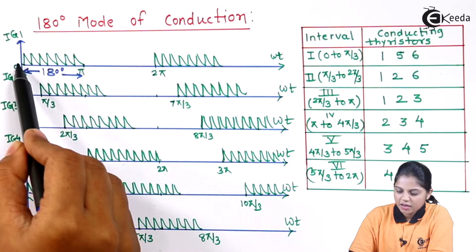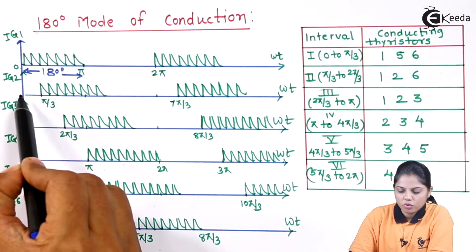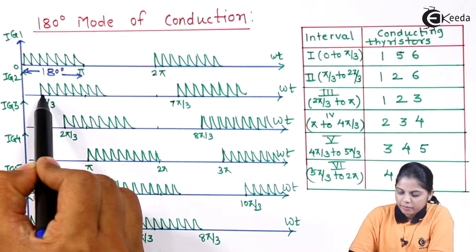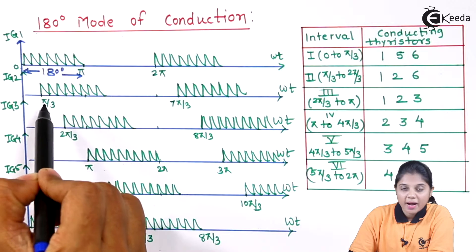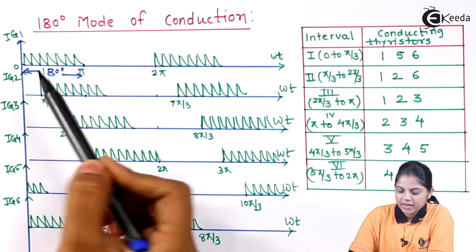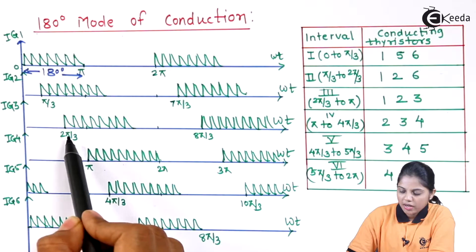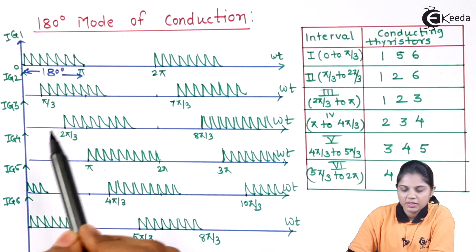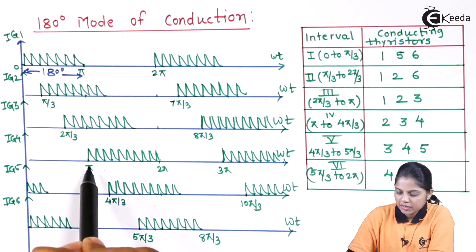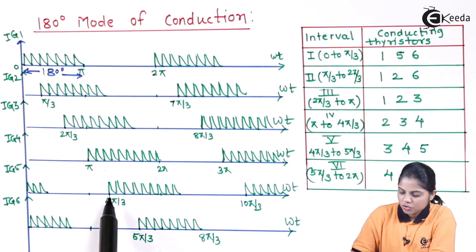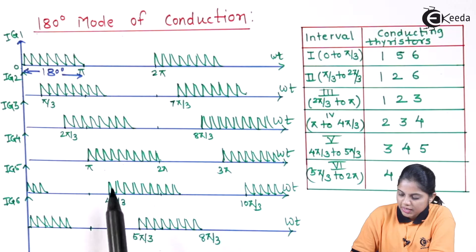SCR1 is turned on at 0. SCR2 starts on at pi/3, that is 60 degrees. Then SCR3 is turned on at 2pi/3, that is 120 degrees. Then the fifth one is turned on at pi. Then the sixth one will turn on at 4pi/3.